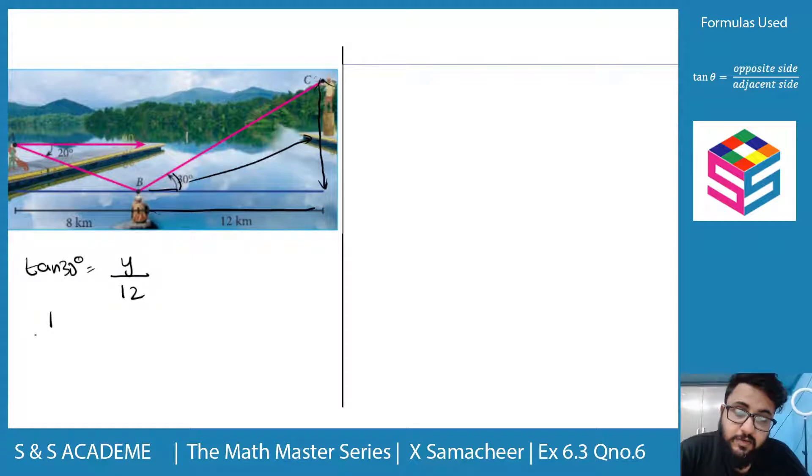We know tan 30 value. 1 by root 3 is equal to y by 12. So, 12 is equal to y. In this case, let's rationalize by multiplying by root 3.